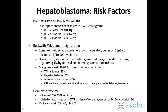Prematurity and low birth weight are associated with an increased incidence of hepatoblastoma, and there is a disproportionate number of cases in low birth weight kids. The relative risk increases the lower the weight. Beckwith-Wiedemann syndrome is well known to be associated with hepatoblastoma — it's a complex multigenic disorder with growth regulatory genes on 11p15.